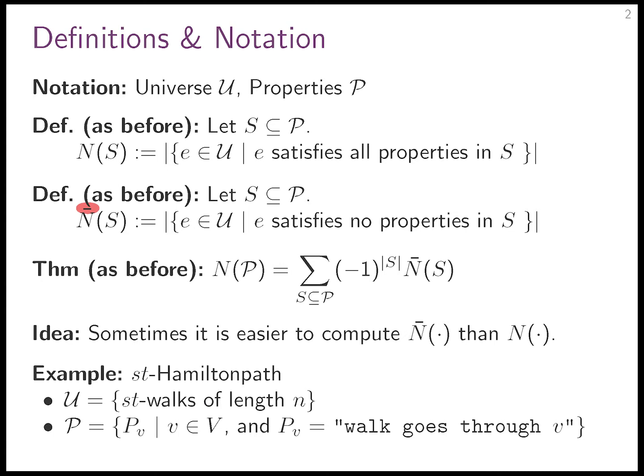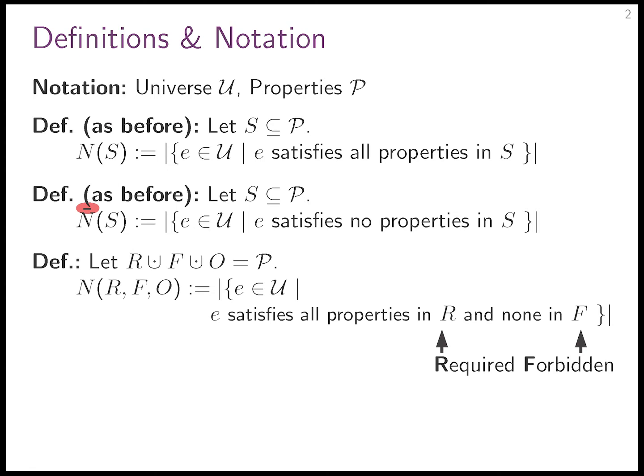For now, we've noticed that we can actually do an inclusion-exclusion approach for something other than coloring. Even this very simple version gives us something we didn't have before: an O*(2^n) time algorithm with polynomial space. Let's go back to definitions and notation. We already had N(S), which satisfies all the properties, and N̄(S), which satisfies none of the properties. Now we're going to be a little bit more precise and introduce three more sets.